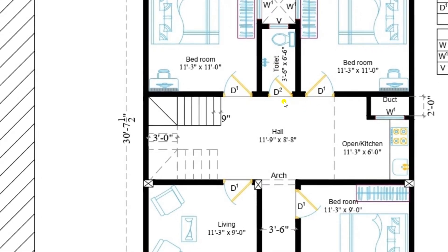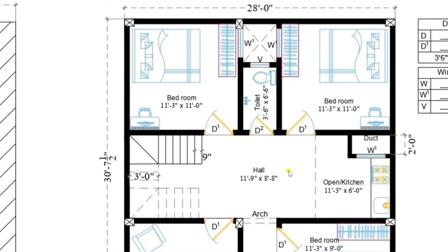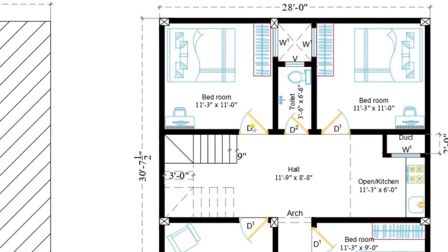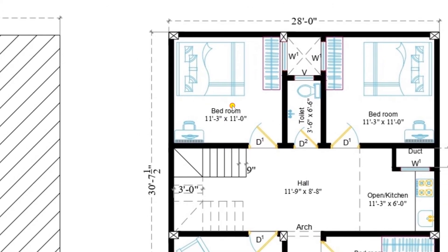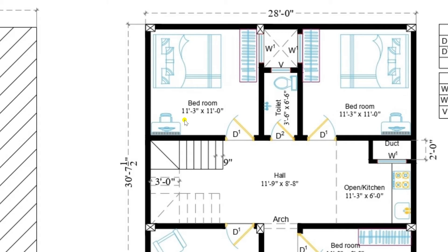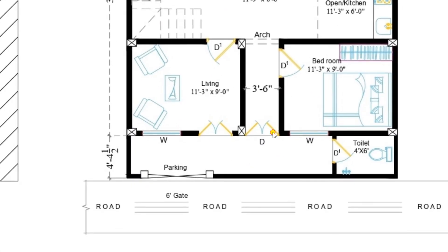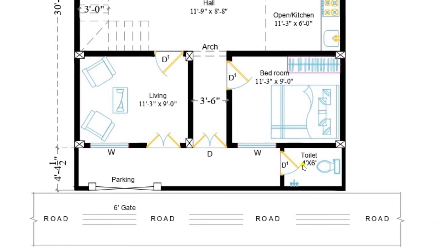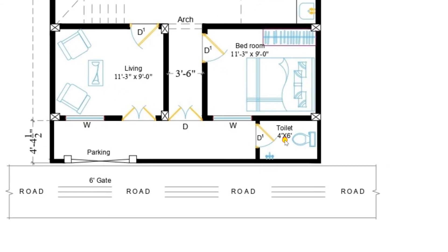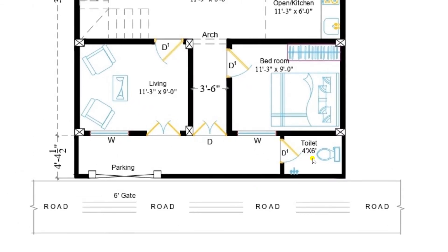Before entering the other bedroom, let us see the toilet. This is a common toilet that can be used by all. I have entered into the second bedroom, which is also 11 feet 3 inches by 11 feet — both bedrooms are the same size. If guests are coming, they can also utilize the toilet available in the parking area, which is 4 feet by 6 feet.